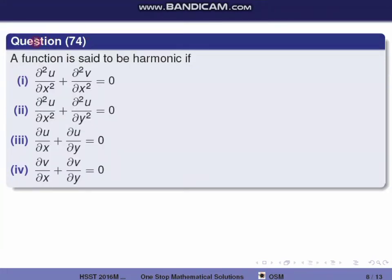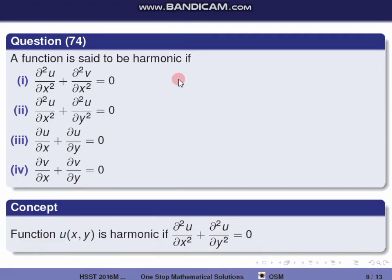Next question, question 74. A function is said to be harmonic — when is a function harmonic? Directly from the definition: a function u(x,y) is harmonic if the second partial derivative of u with respect to x squared plus the second partial derivative of u with respect to y squared equals zero. The correct option is the second one.